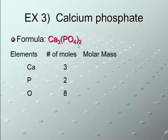Now, we're going to look at the periodic table. Calcium is 40. Phosphorus is 31, essentially. And oxygen is 16.